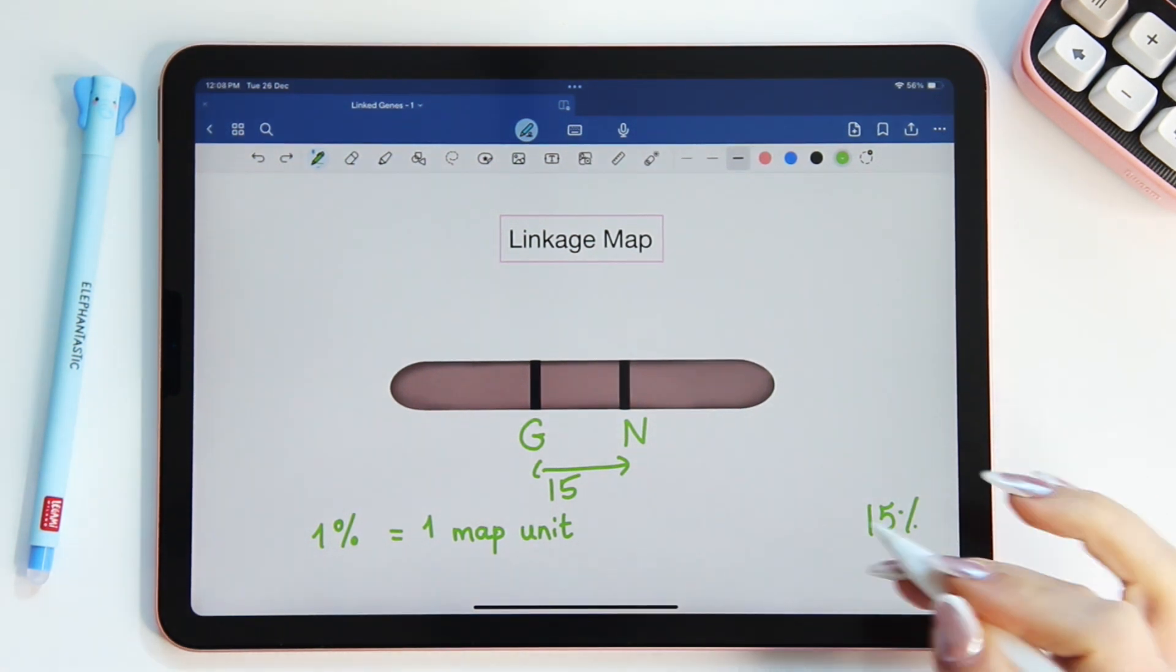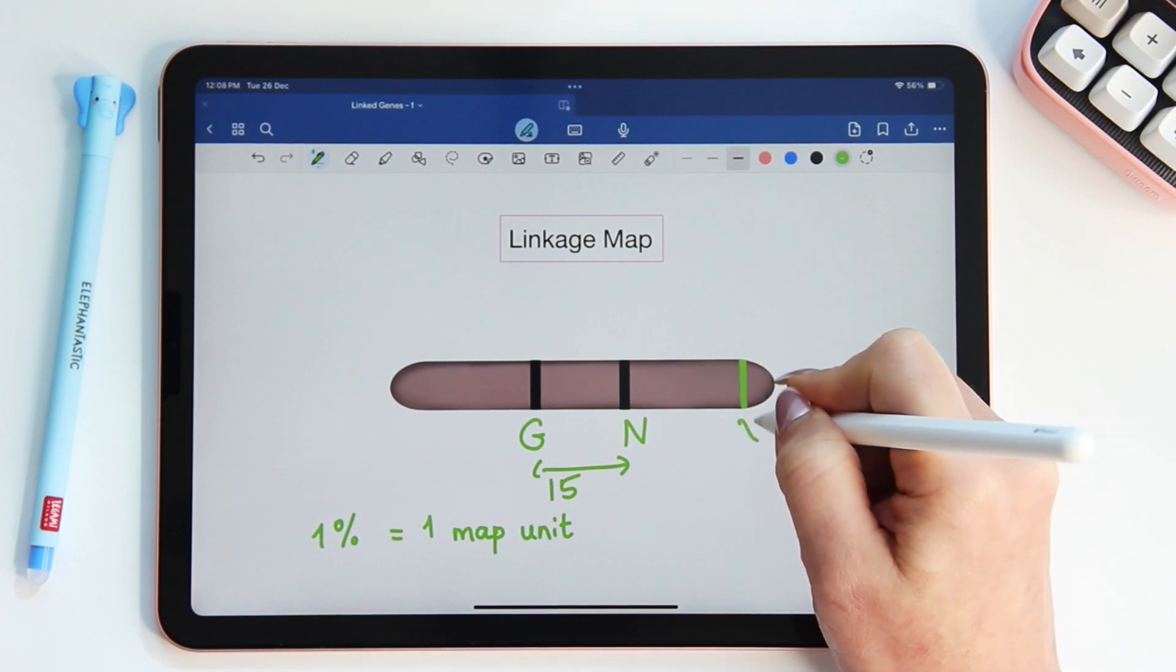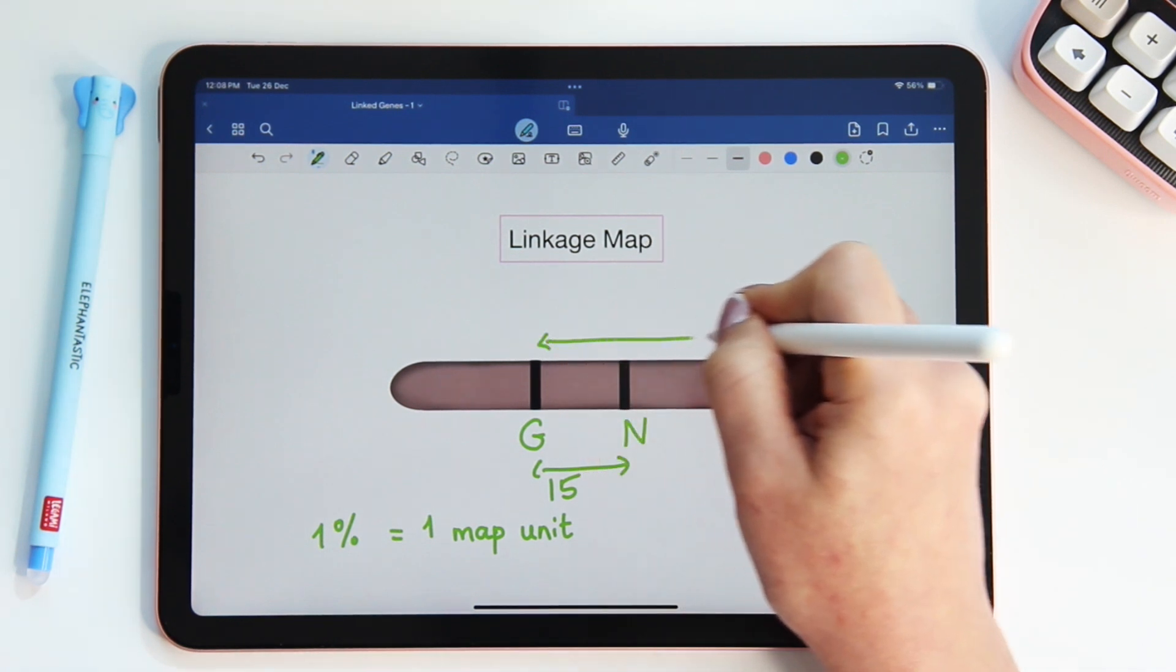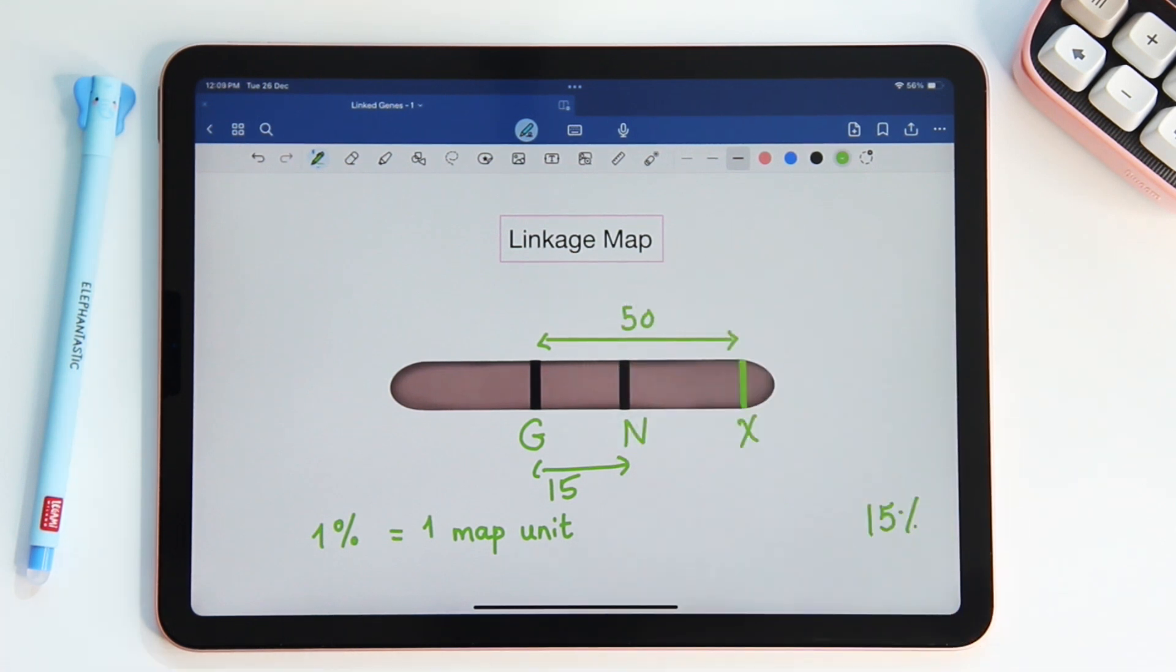Now, let's add a gene and call it X. I'm going to add a gene right here. And we will call it X. And let's say that G and X are 50 map units apart. Then they will behave as if they are on different chromosomes.